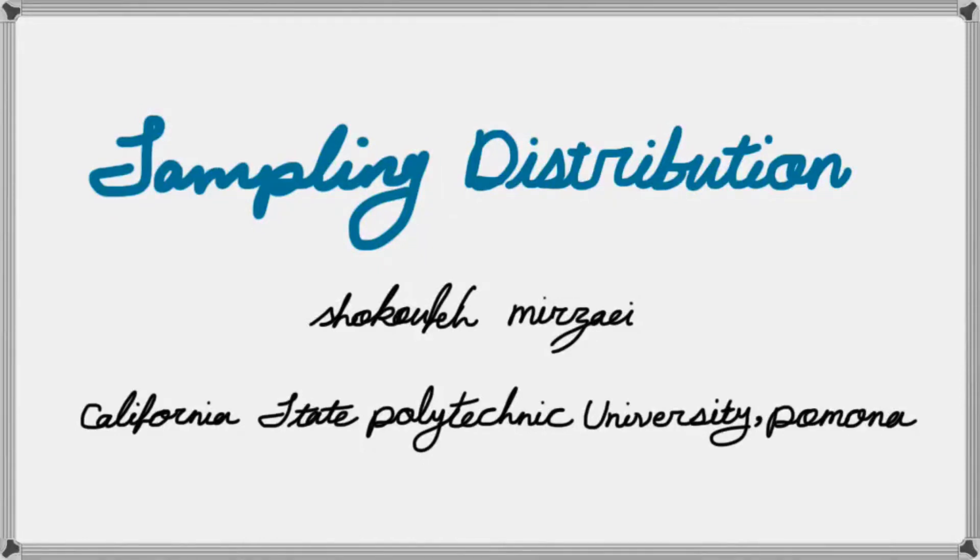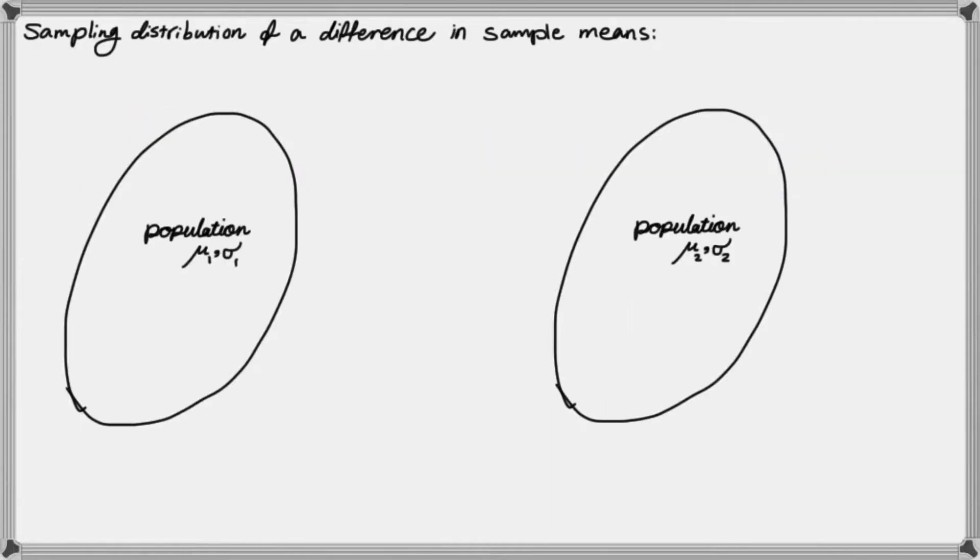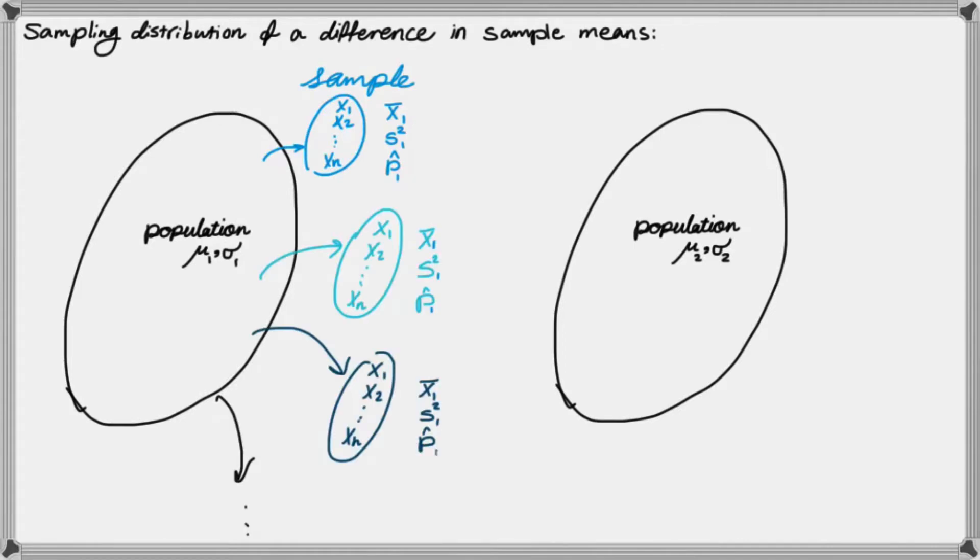Hello everyone, this is Mirzai, and in this lesson we're going to talk about sampling distribution. This time we're going to look into sampling distribution of a difference in sample means. So this time suppose that you have two populations. Now suppose that you repeat the sampling process from each of these populations.